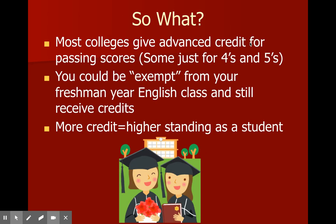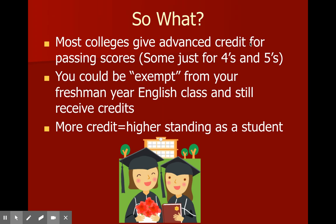If you pass the AP exam, most colleges give you credit for passing scores. Some schools give credit only for fours and fives, but all Illinois public schools give you credit for a passing score. That means you could be exempt from your freshman year English class and receive those credits — possibly as elective credits. The more credit you enter college with, the higher standing you get as a student, which means you register early, can take upper-level classes more quickly, graduate sooner, and save money.